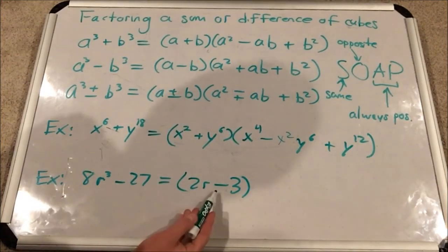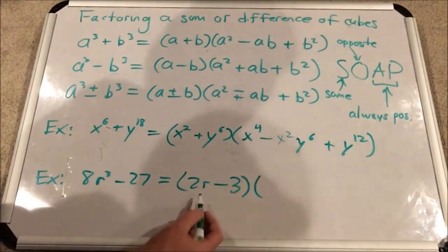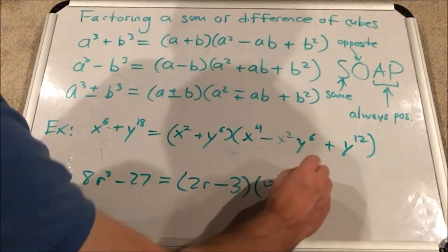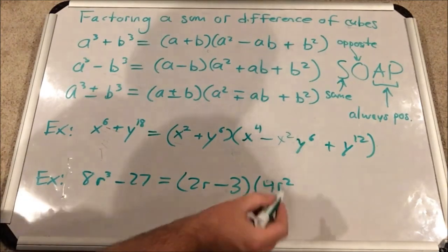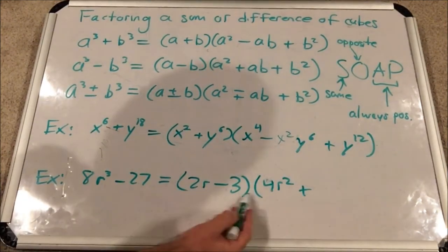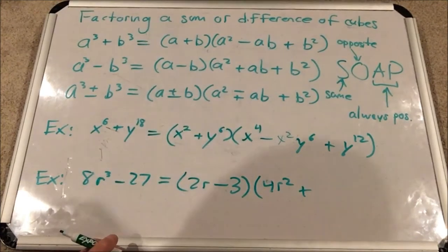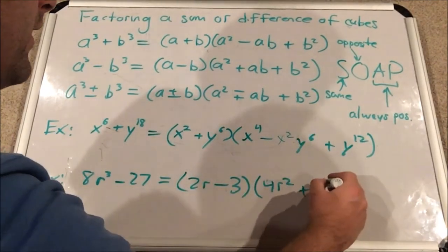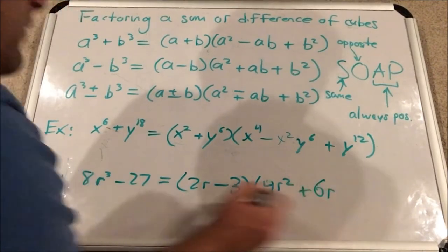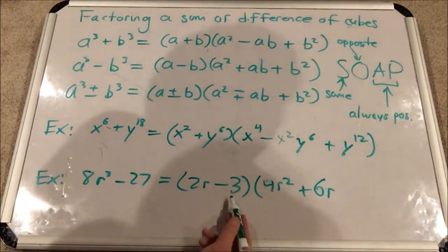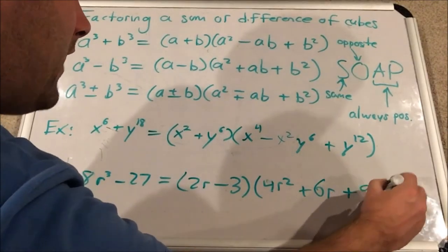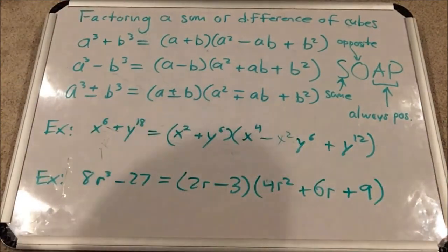The cube root of both terms subtract its same sign. Then you take the square of the first term. That would be 4r squared. Then we will add, opposite sign, the product of these two terms by itself. That would be 6r, 2r times 3. And then 3 squared, positive. So it'd be 9. Like so. So those are some simple examples.